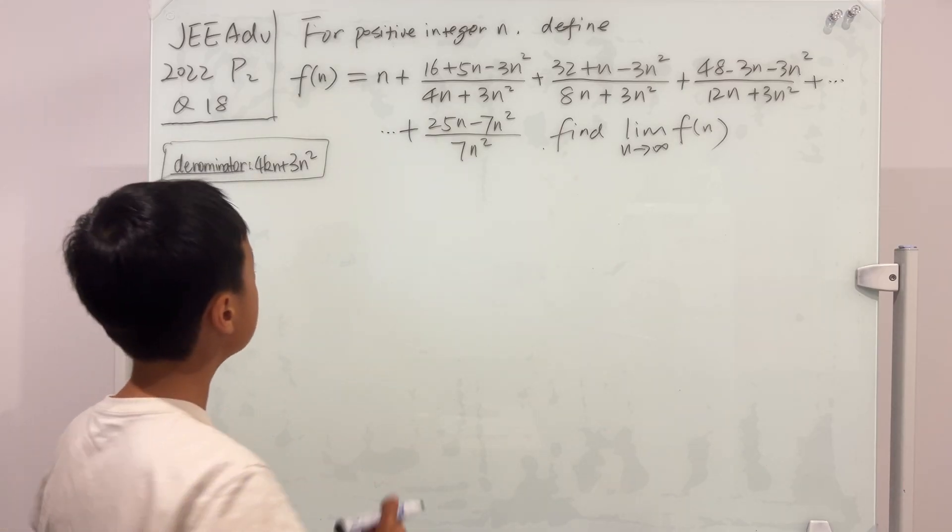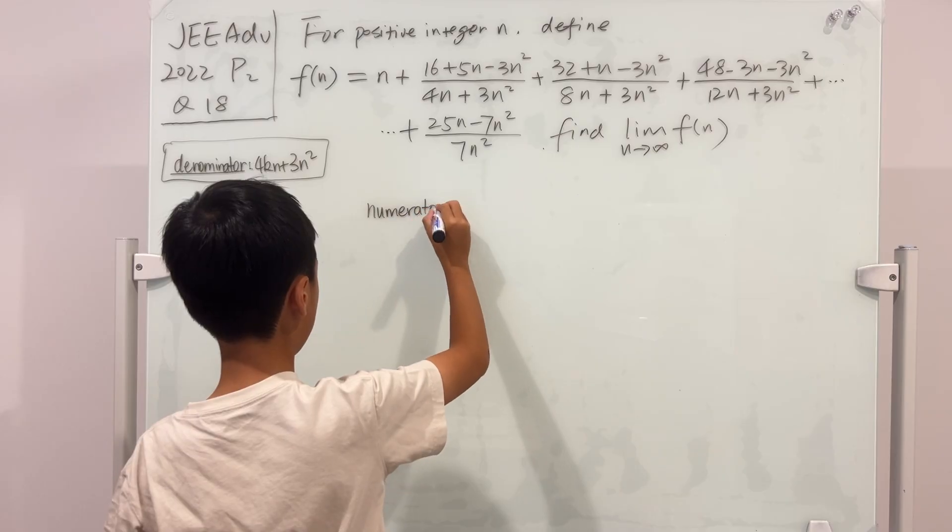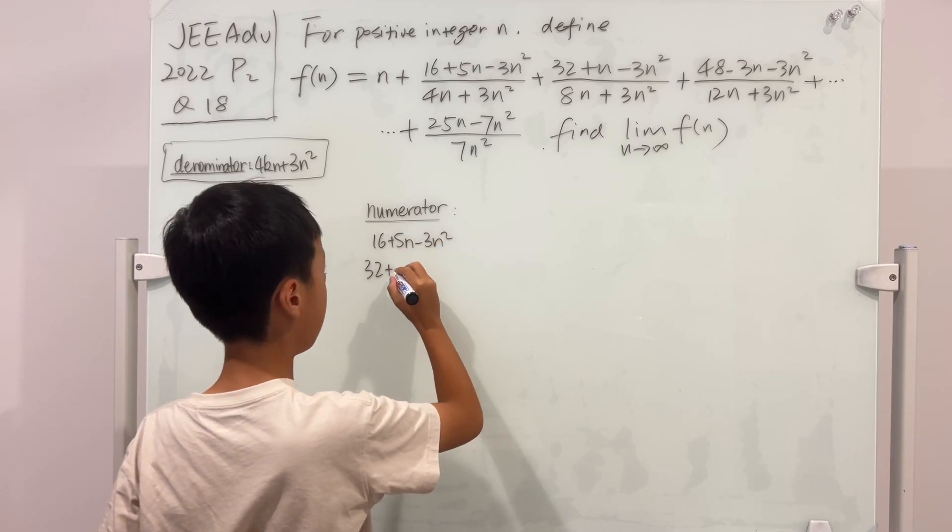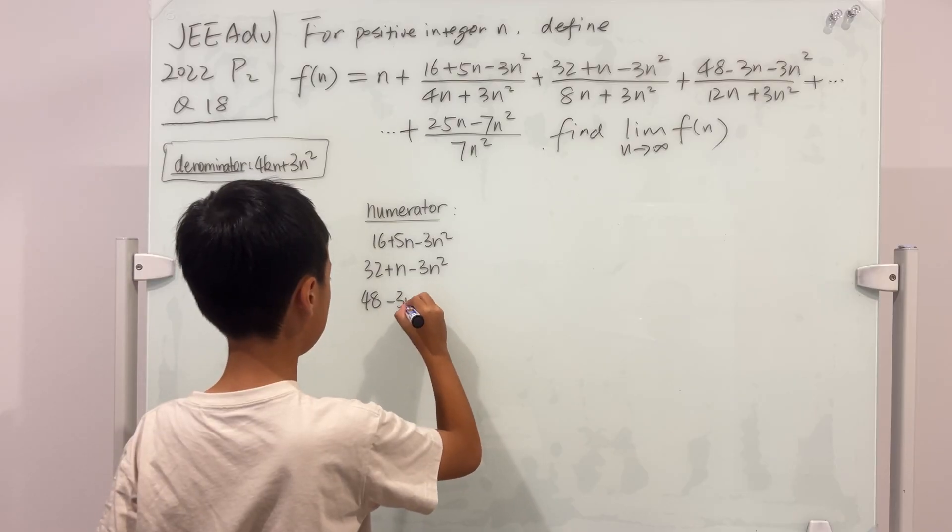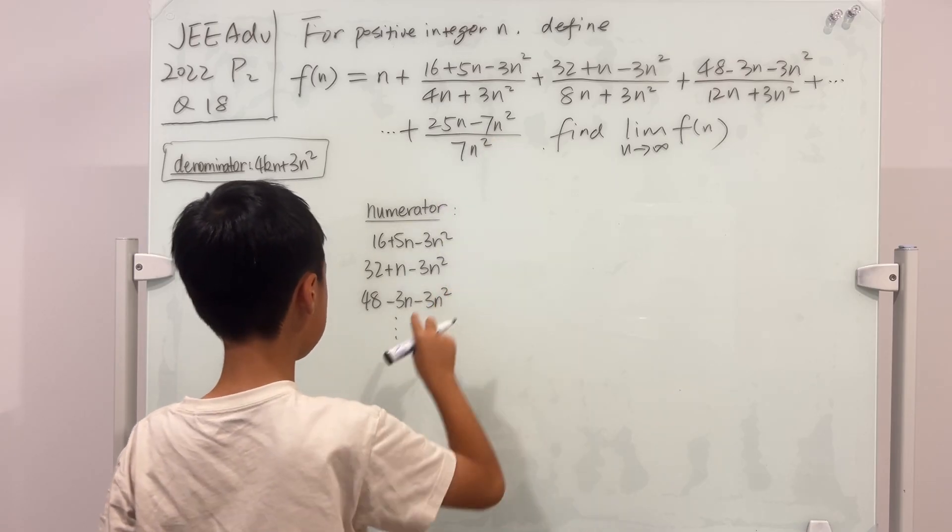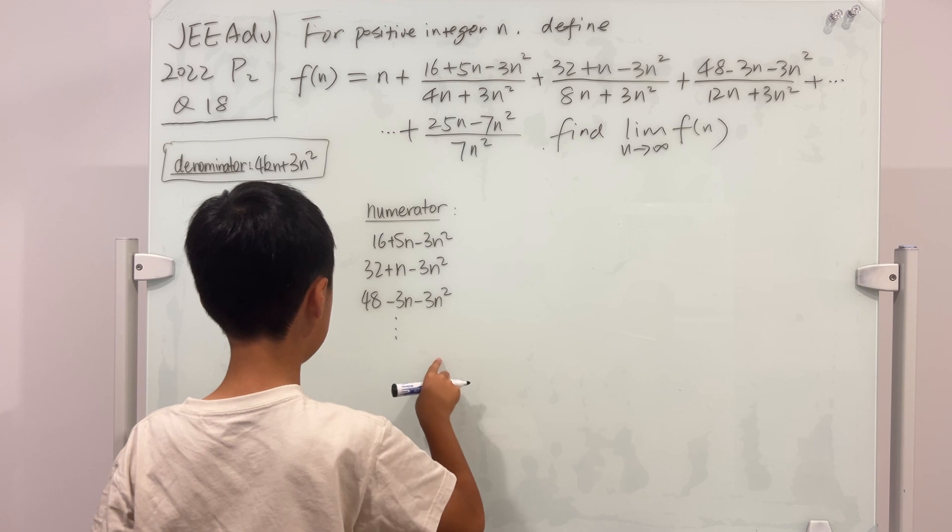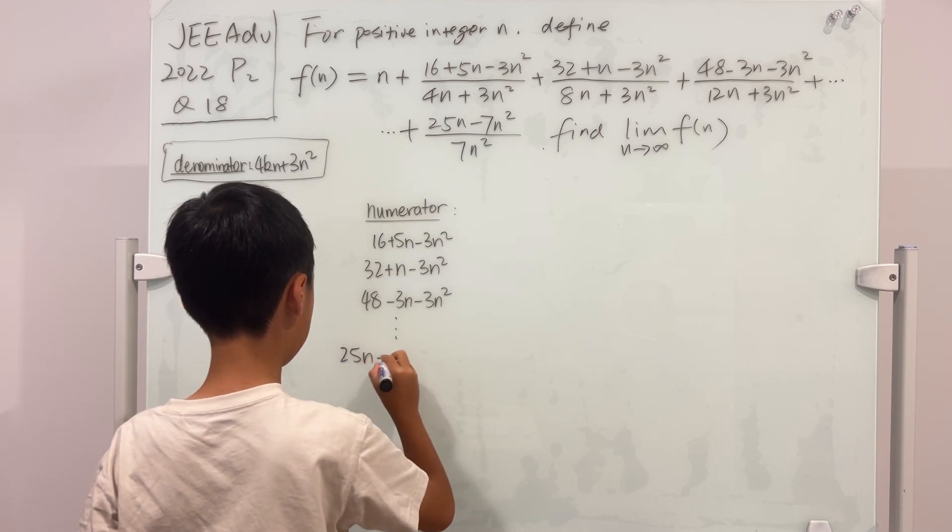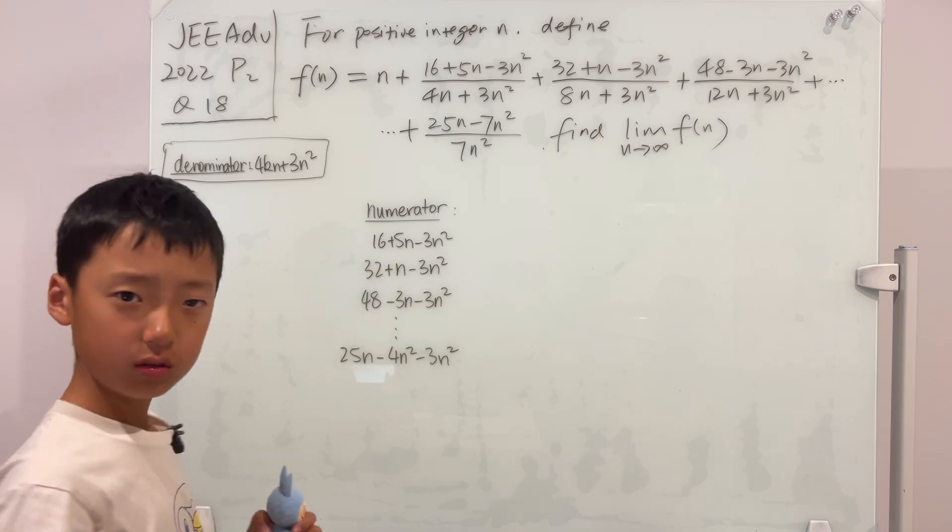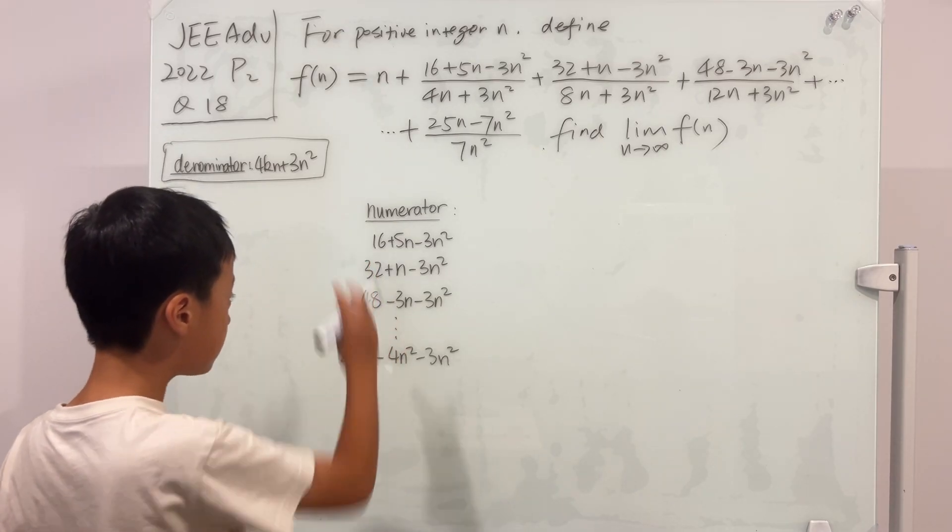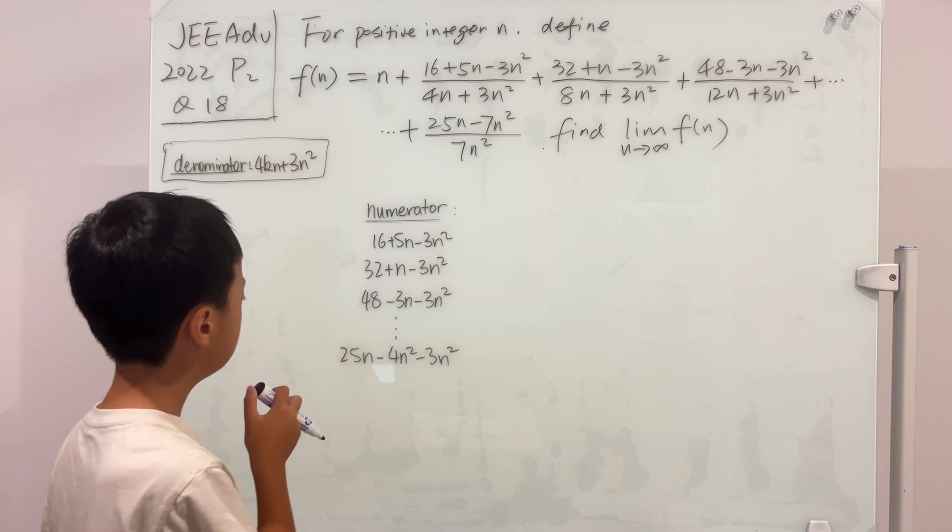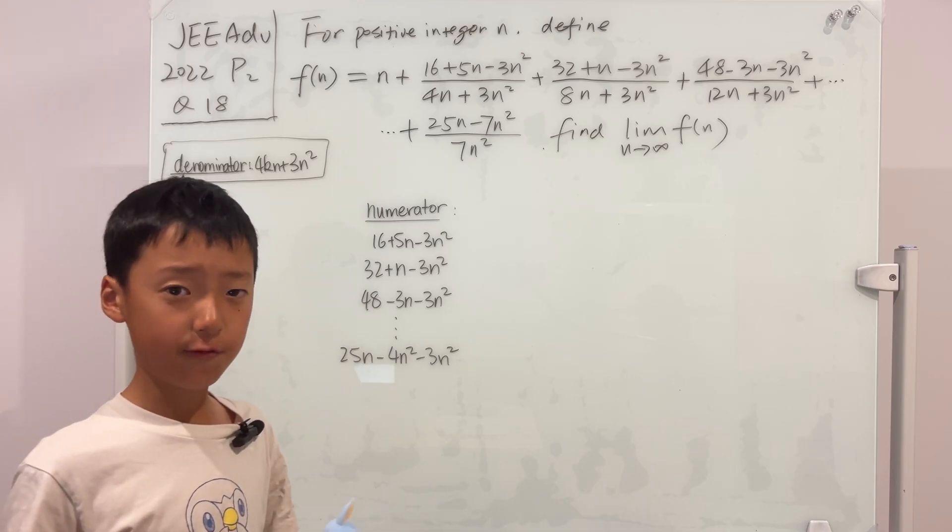So now we can try to do the numerator. I'm going to write this part in the column as well. Look, another thing we're guaranteed about. This last term is always 3n² again. Now, let's focus on the middle term. First thing that we notice is that they all differ by 4n.